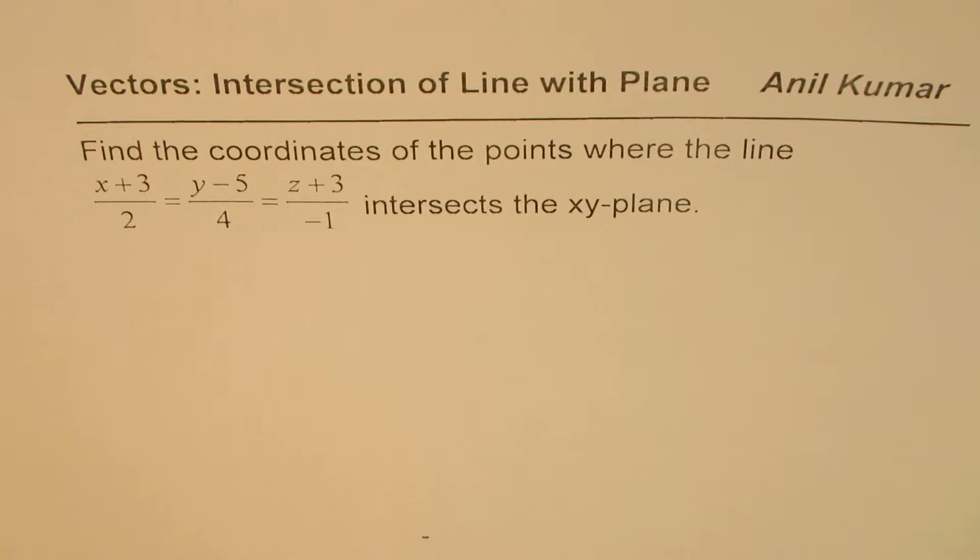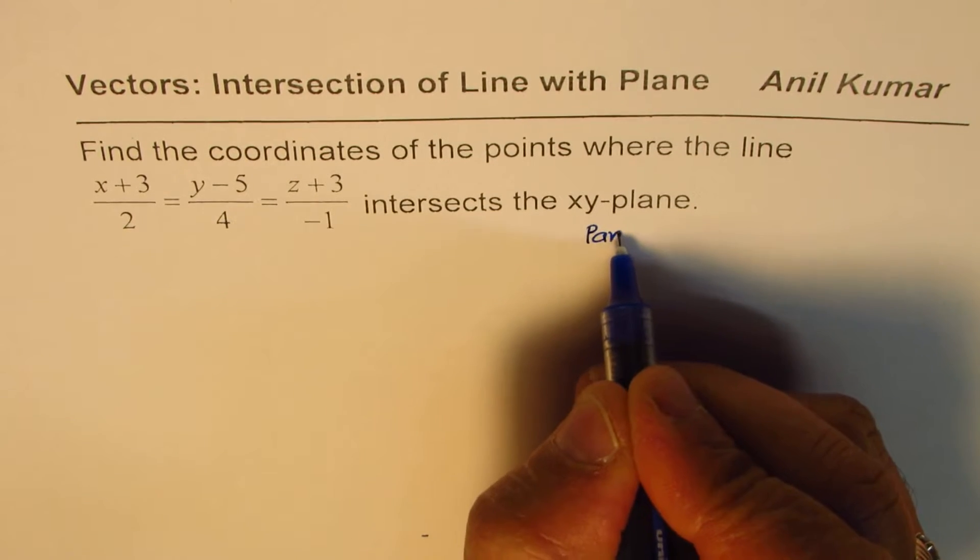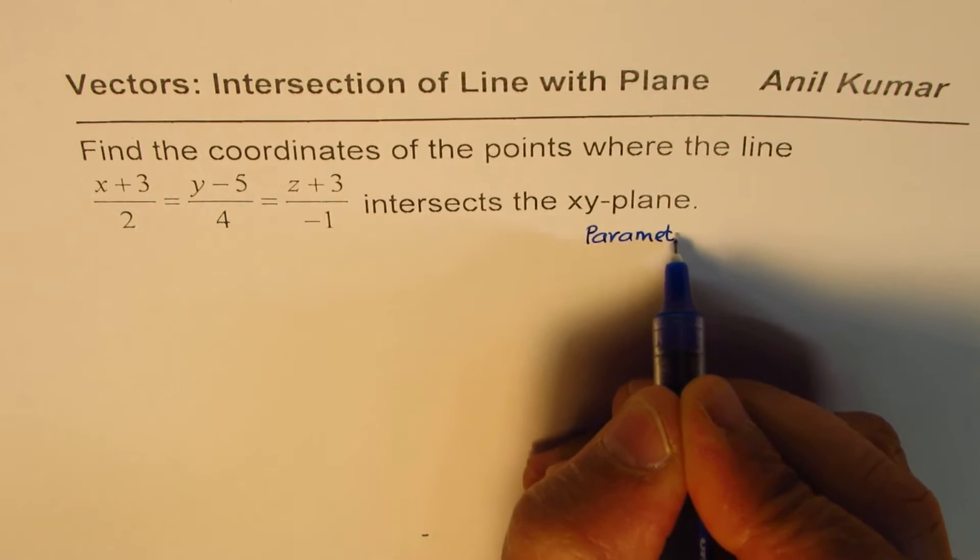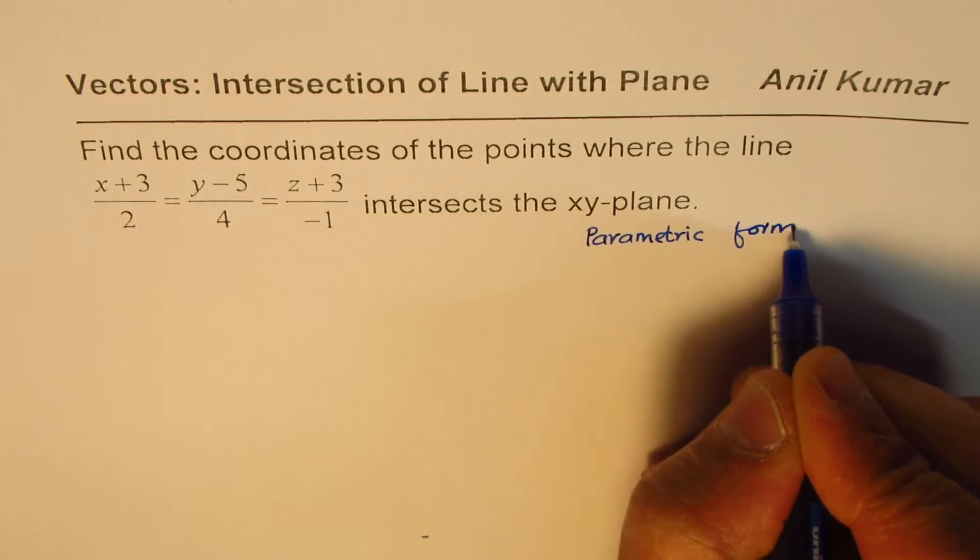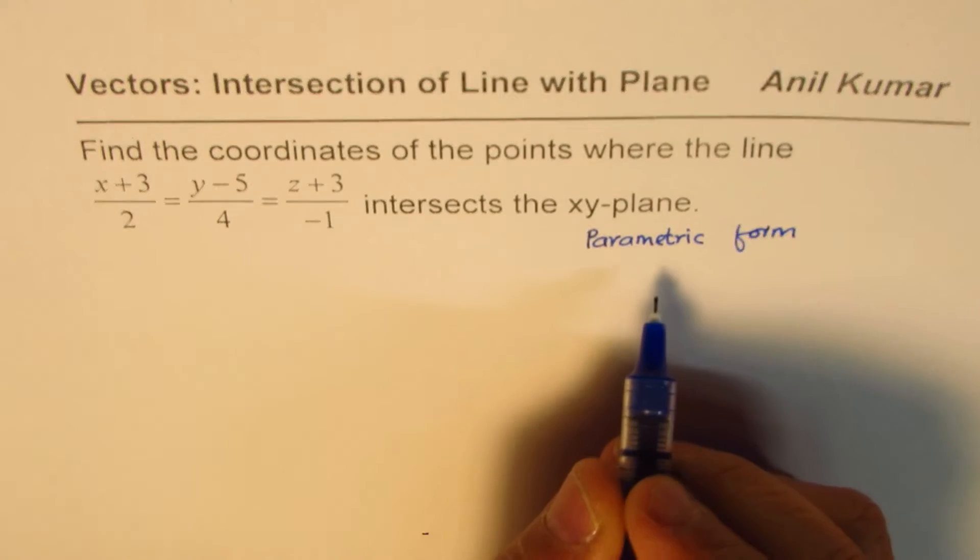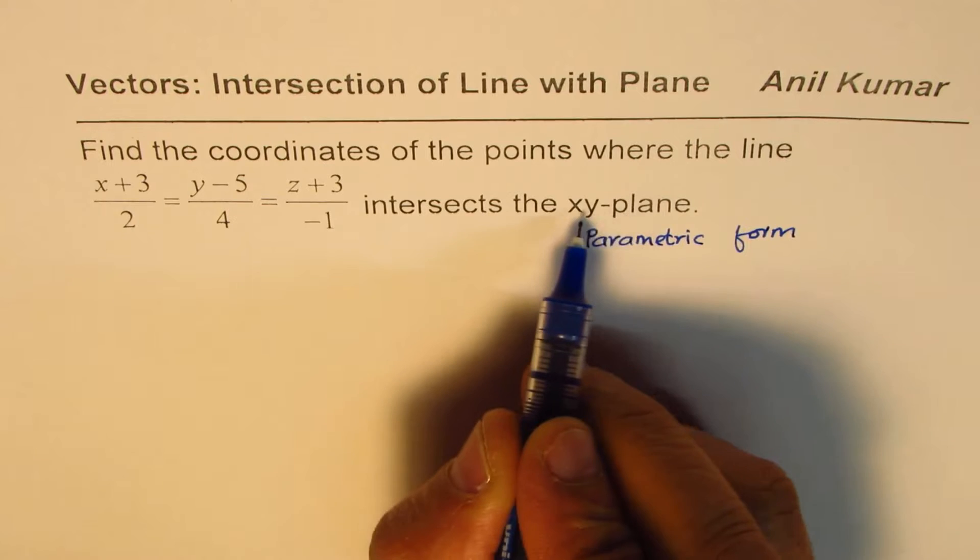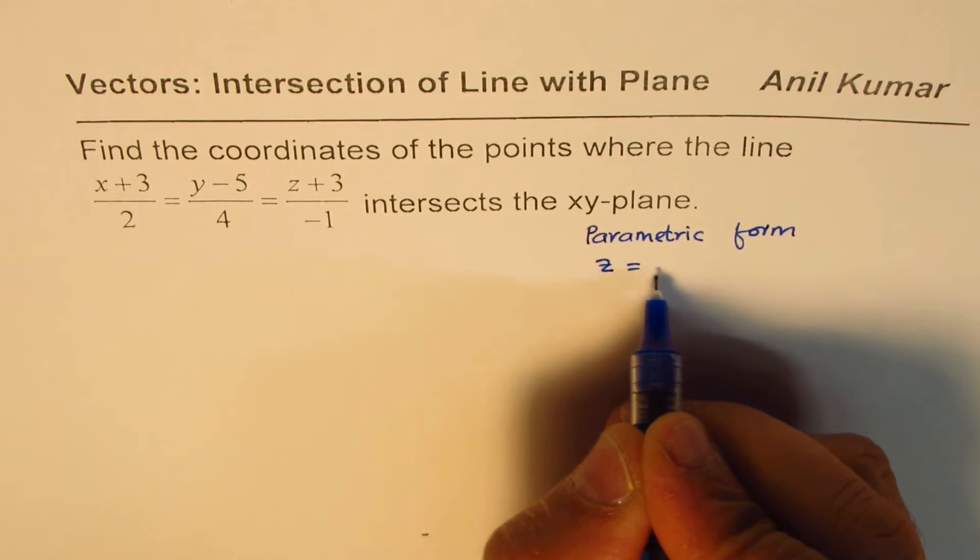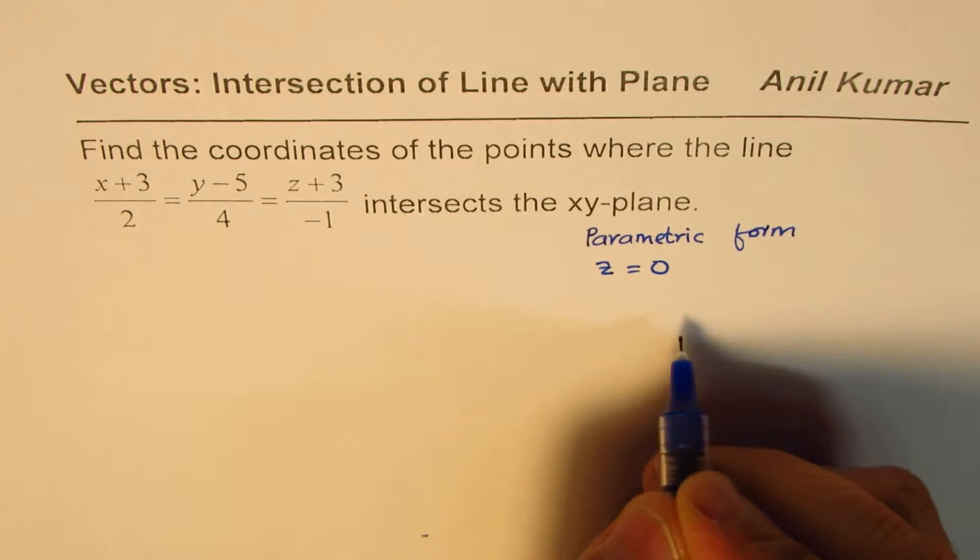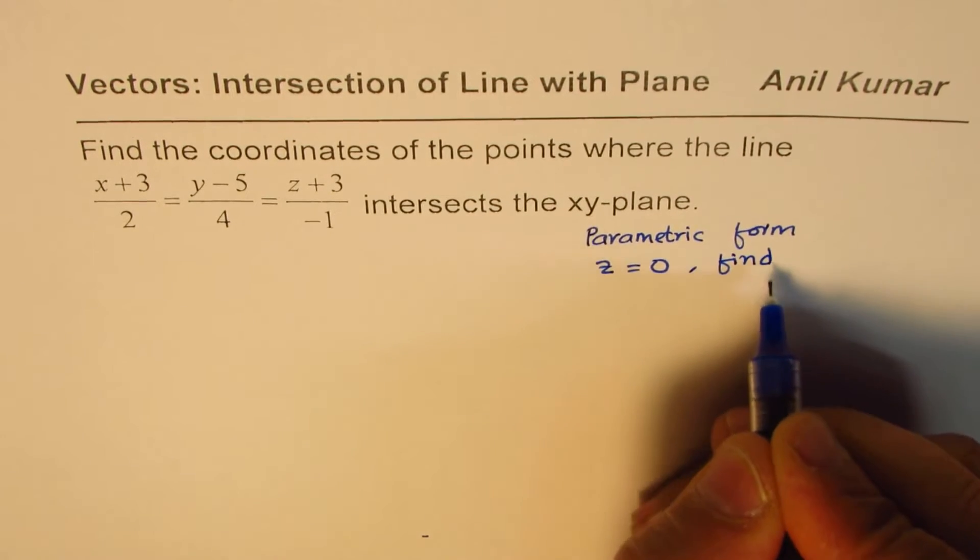Now, to solve such a question, we'll actually first write the parametric form of the equation. And then we'll find the parameter by placing, intersect xy plane means what? By placing z equals to 0. So in xy plane, z value will be 0. Find parameter.